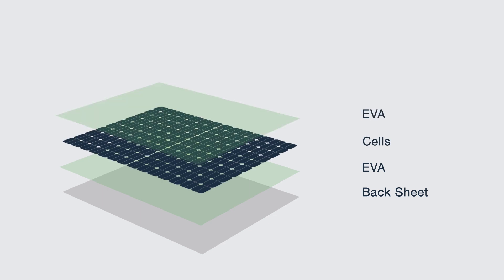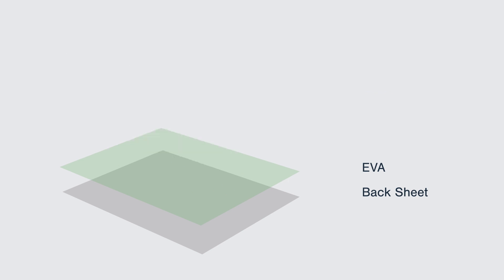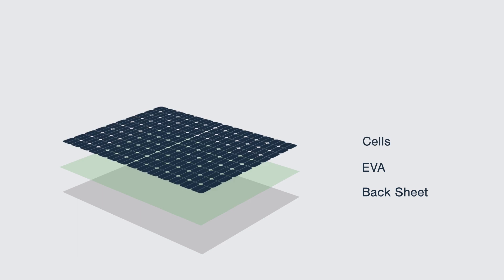If the arrangement of the cells determines the efficiency of the PV conversion, then the backplane laying determines how to export the current better. Lay the EVA and the backing plate in order to the cells after dispensing, and make the lead of the deflector strip pass through the holes onto the backplate.